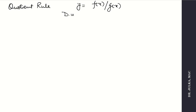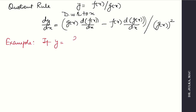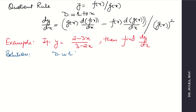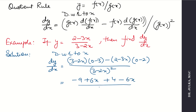Next is the quotient rule. When two functions are given in divisive form as y equals f(x) divided by g(x), the differentiation with respect to x is: g(x) as it is times derivative of f(x) minus f(x) as it is times derivative of g(x), all divided by g(x) whole square. Example: if y equals (2 minus 3x) divided by (3 minus 2x), find dy by dx. Using the quotient rule, the denominator is (3 minus 2x) whole square. Derivative of numerator is minus 3, minus numerator as it is times derivative of denominator which is minus 2. After solving and expanding, the answer is minus 5 divided by (3 minus 2x) whole square.